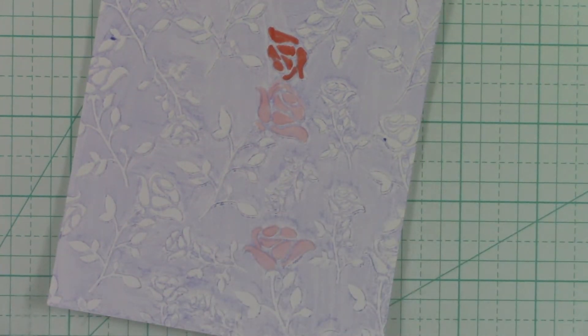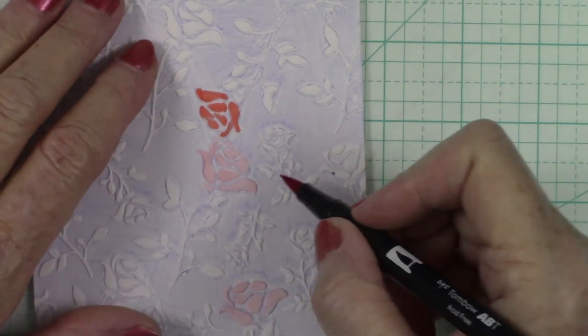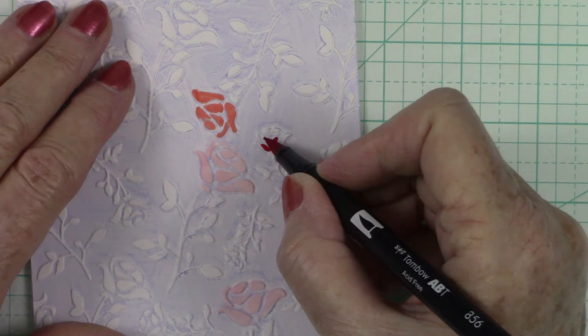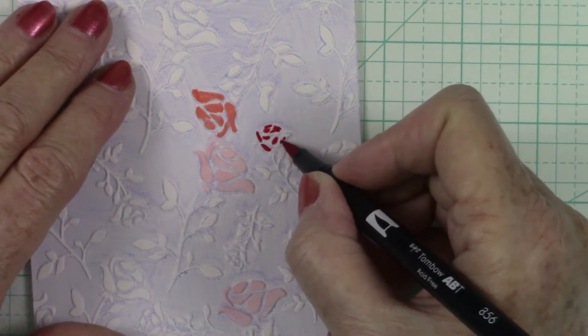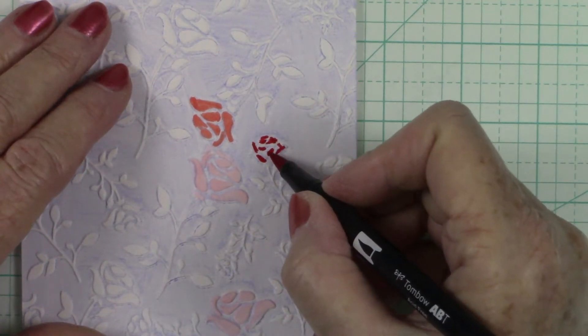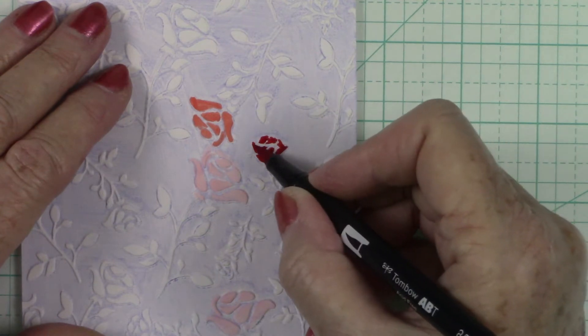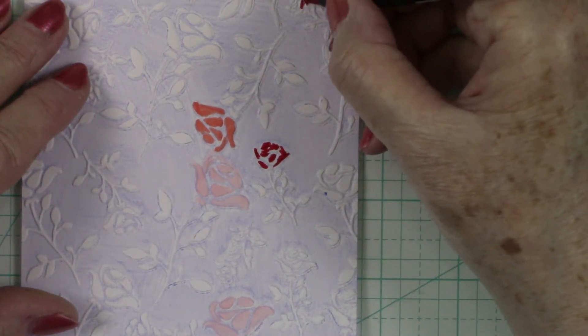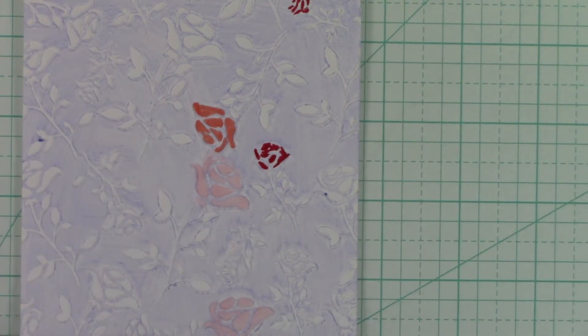Let's try the Tombow marker and see how that works on it. I have not tried this. This is my favorite red in the Tombows. So I think I'm going to go in here and do this little rose. I hope I'm not in the camera with my head. But see how easy this is to color? And you don't have to worry about going out of line because these are raised up.